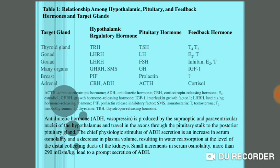LH and FSH both work on gonads — either male gonads (testes) or female gonads (ovaries). Growth hormone targets the whole body. Prolactin works on mammary glands or breasts of females for milk production. ACTH, the hormone from the anterior pituitary, works on the adrenal gland, which we will learn about later. These were the hormones from the anterior pituitary gland.